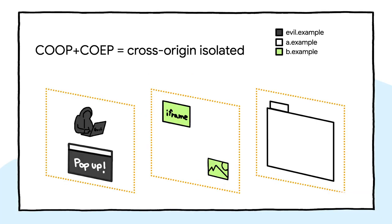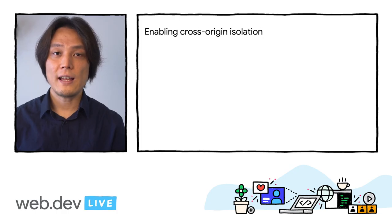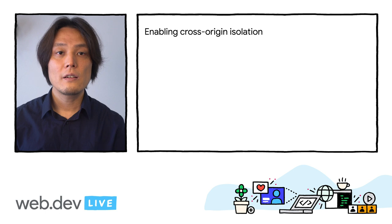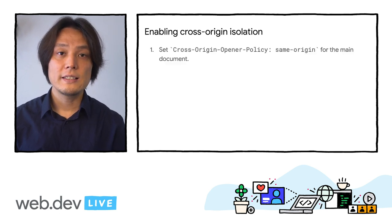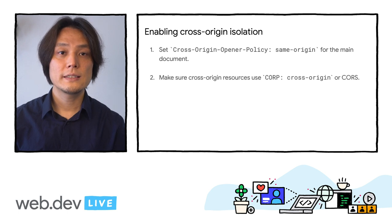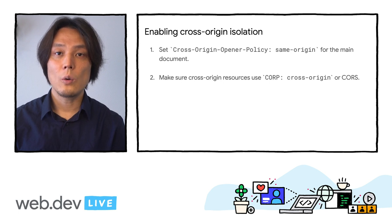Chrome on desktop enabled site isolation. This allowed shared array buffers to be turned back on for desktops. To achieve more robust isolation, the browser needs an explicit signal from the website that they want to be isolated from cross-origin resources — that is what COOP and COEP are about. To enable cross-origin isolation, you need to do three things: first, set Cross-Origin-Opener-Policy to same-origin for the main document; second, make sure cross-origin resources use Cross-Origin-Resource-Policy cross-origin or cross-origin resource sharing; third, set Cross-Origin-Embedder-Policy to require-corp for the main document.